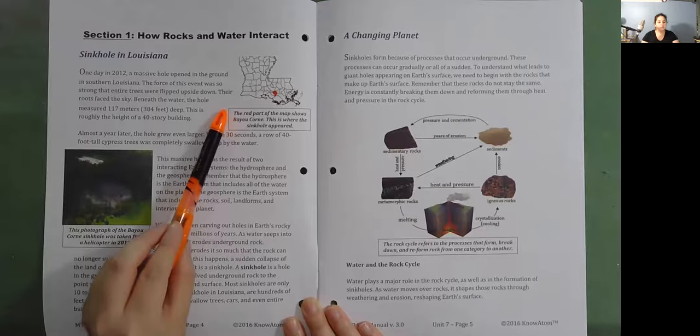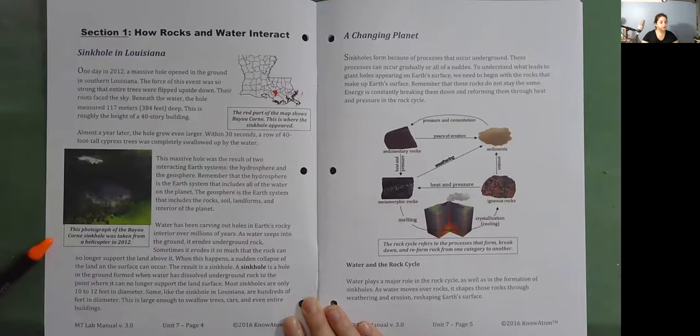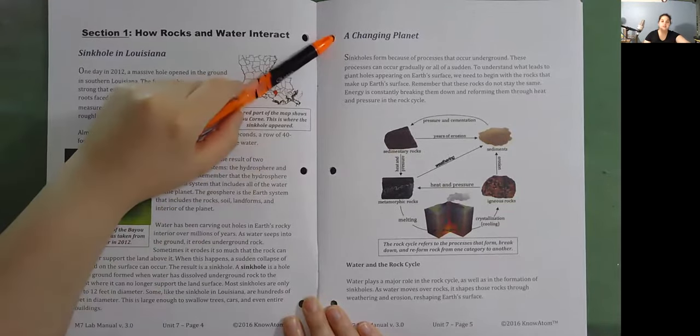The red part of the map shows Bayou Corn. This is where the sinkhole appeared. This photograph of the Bayou Corn sinkhole was taken from a helicopter in 2012.